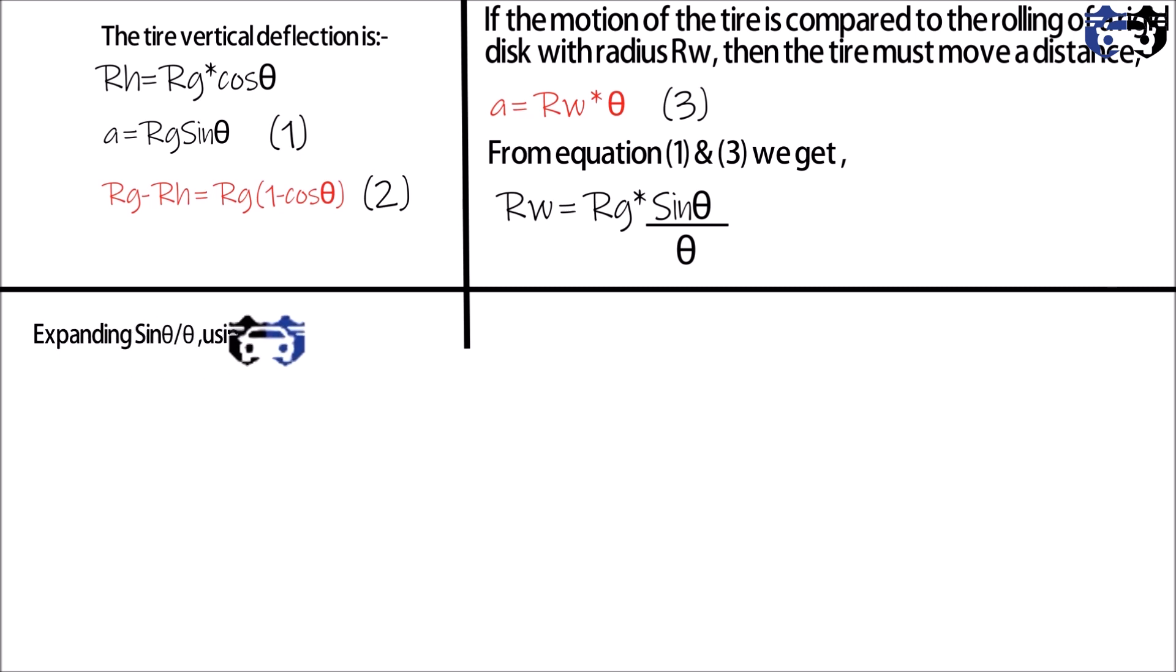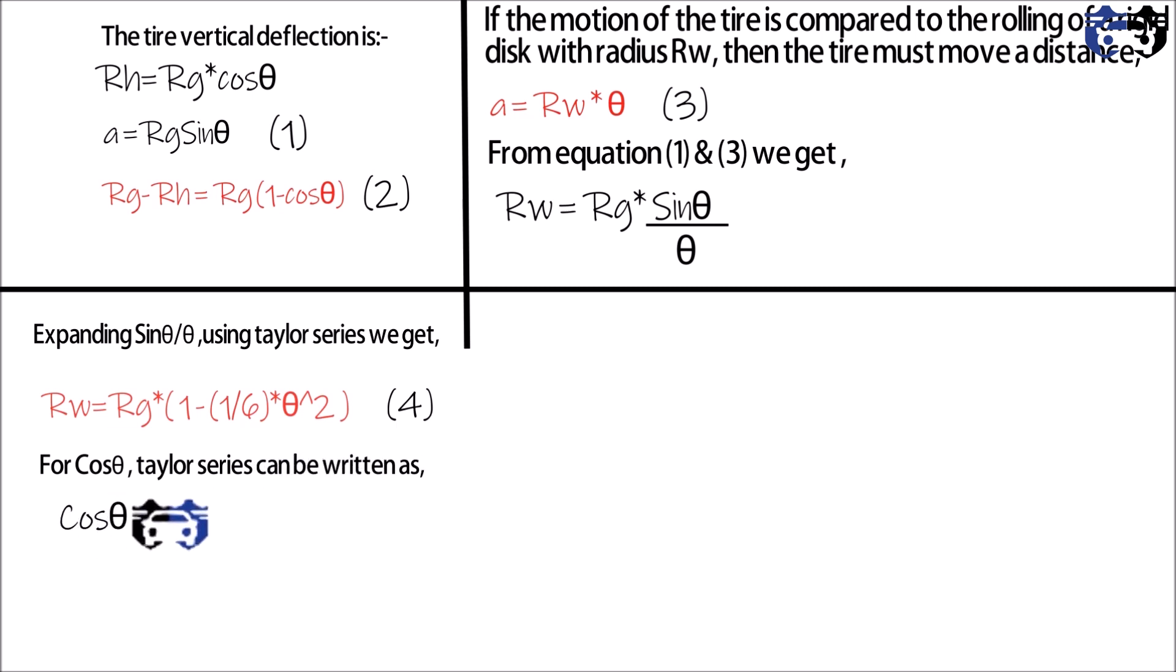Now I'm going to expand sin theta by theta using the Taylor series. So Rw equals to Rg multiply by one minus one by six into theta square. I'm going to take the two terms only, so this is our equation four. Now for cos theta, the Taylor series can be written as cos theta equals to one minus theta square divided by two.